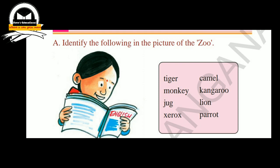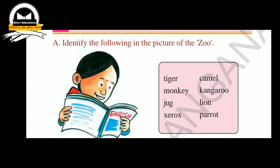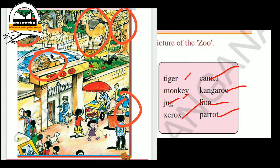Identify the following in the picture of the zoo. We need to identify the given words in the zoo picture. The first is giraffe, next kangaroo, next parrot. Draw a circle around the identified animal. In the next picture there is a tiger, lion, camel, monkey, and a jug.